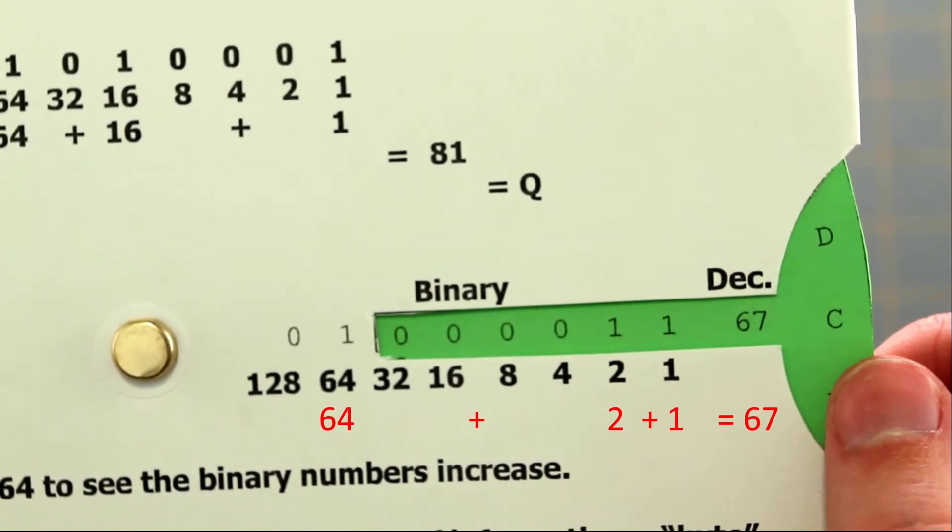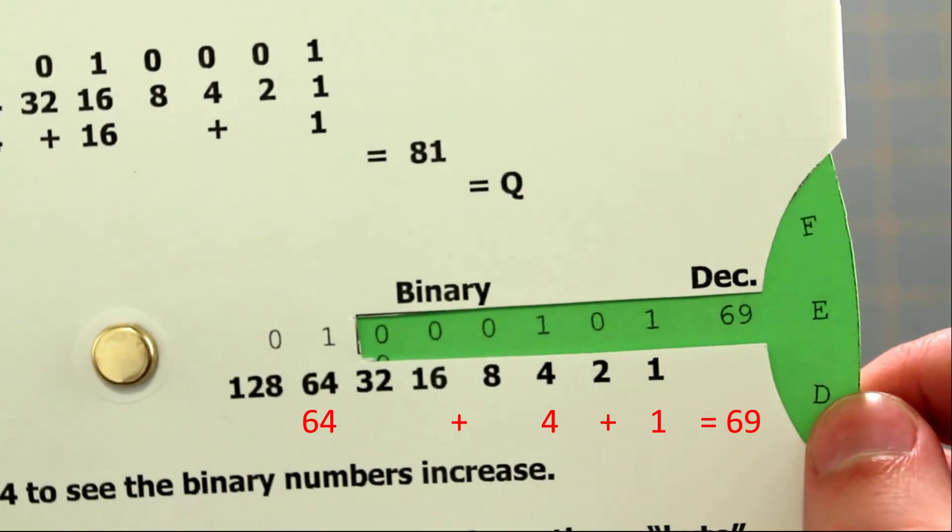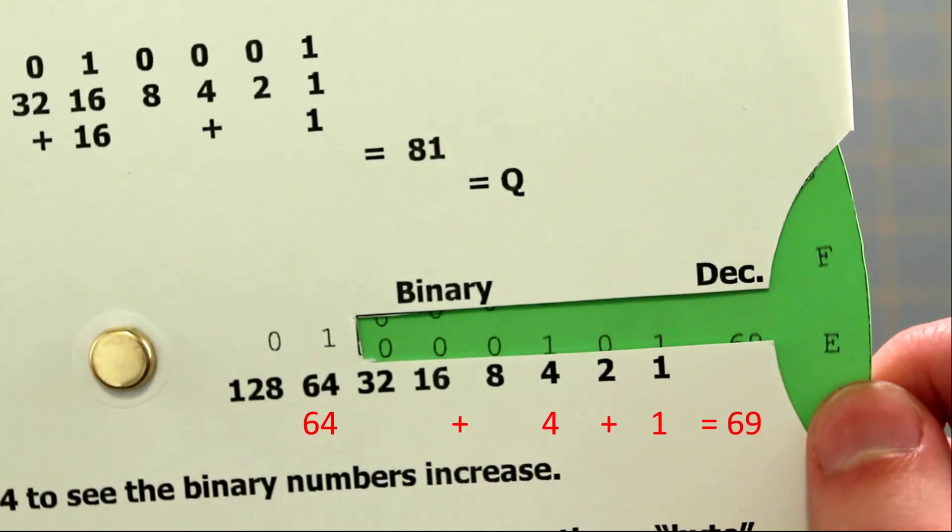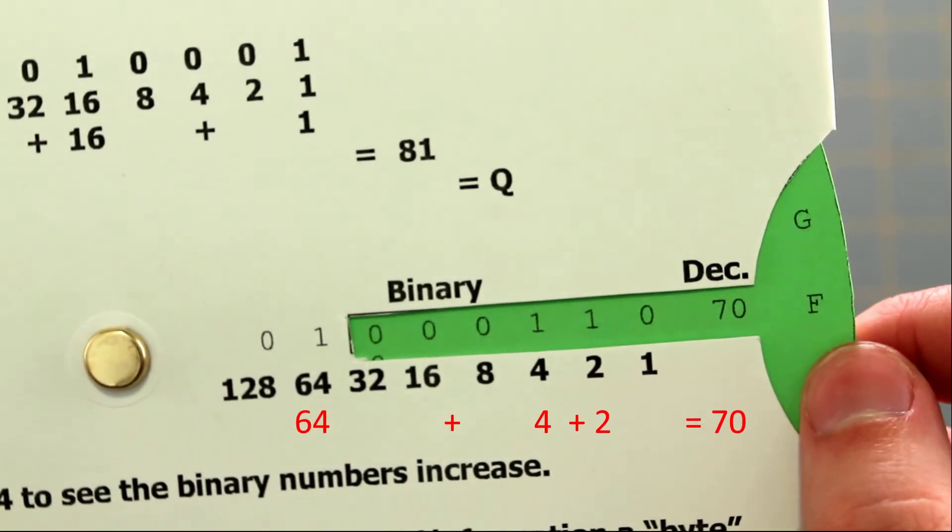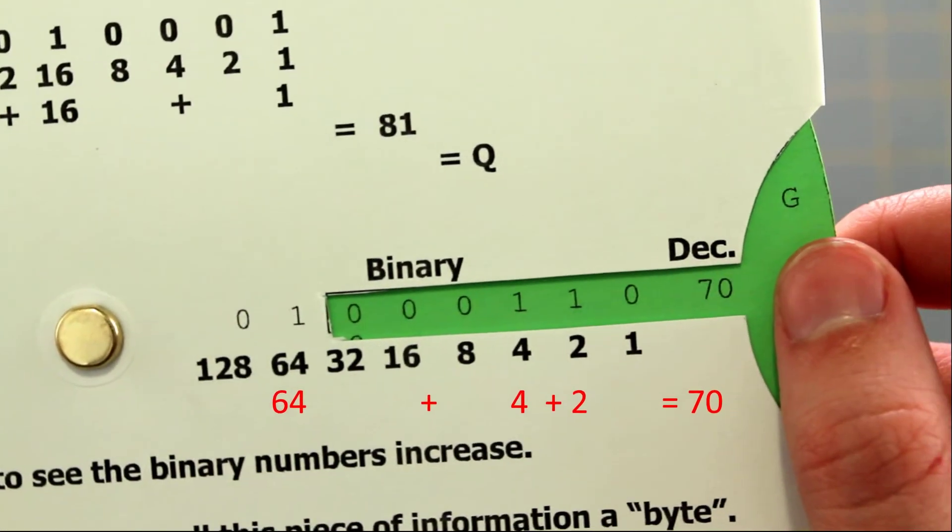Each single binary digit, a 1 or a 0, is a bit, while the cluster of 8 bits that represents one of these characters is called a byte. The decoder wheel also contains definitions for other terms, such as kilobytes, megabytes, gigabytes, and terabytes.